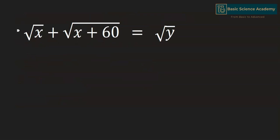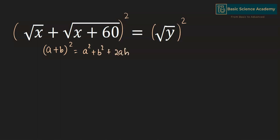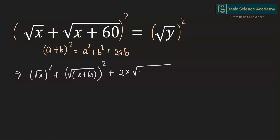First of all, let's simplify the equation by squaring both sides. The left side is in the form of (a + b)², which equals a² + b² + 2ab. This gives: (√x)² + (√(x+60))² + 2 · √x · √(x+60) equals y².